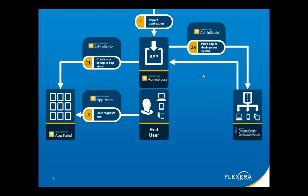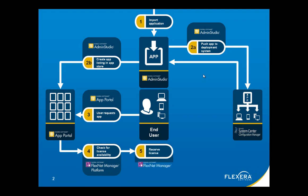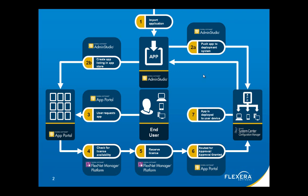When an end user requests an application from App Portal, App Portal will first go out to Flexera's FlexNet Manager platform and check to see if there's a license for this software available. If there is, it will reserve that license and make that known within FlexNet Manager. Any approvals or other workflows that need to be done can be managed within App Portal. Once the approvals have been met, App Portal then signals over to System Center Configuration Manager to deploy the application out to the end user.